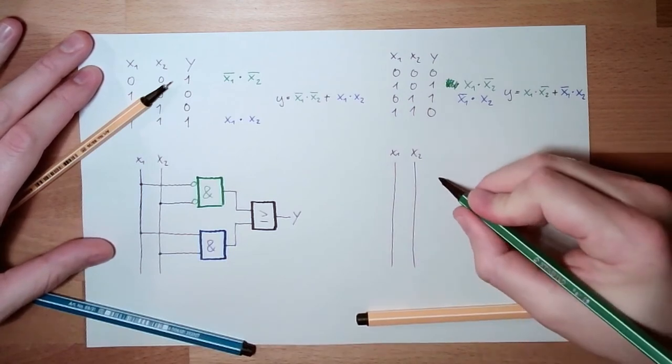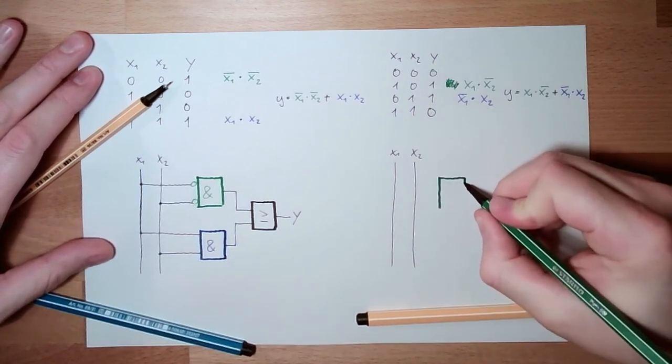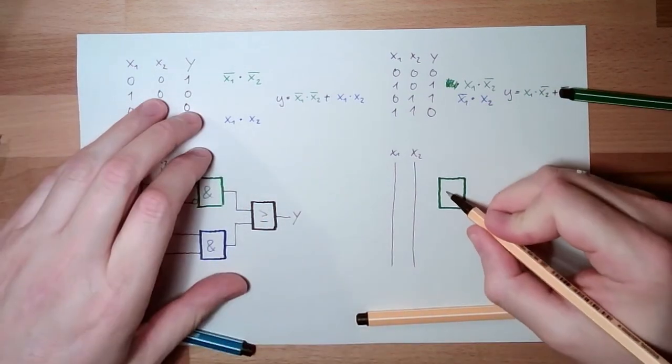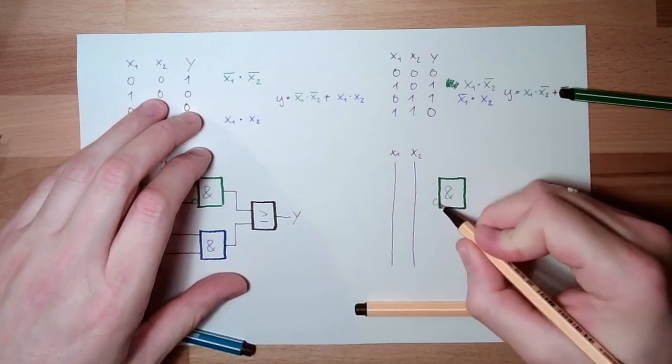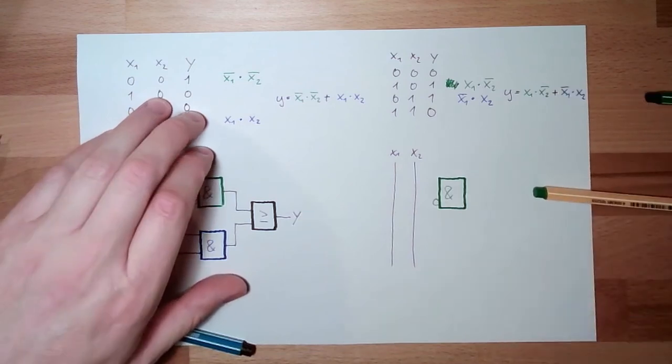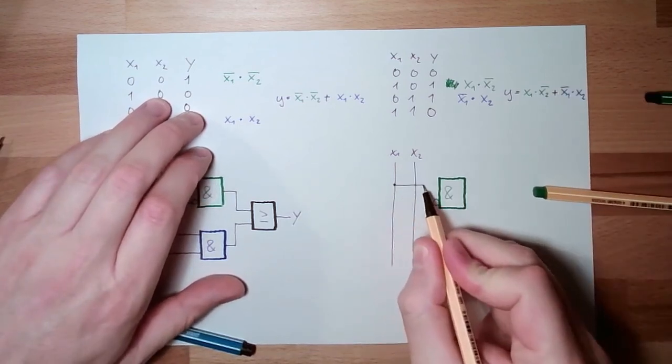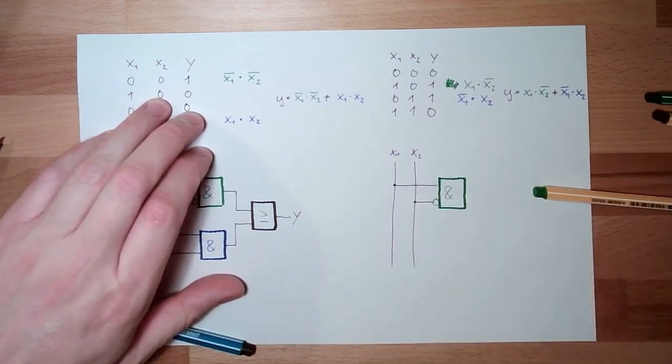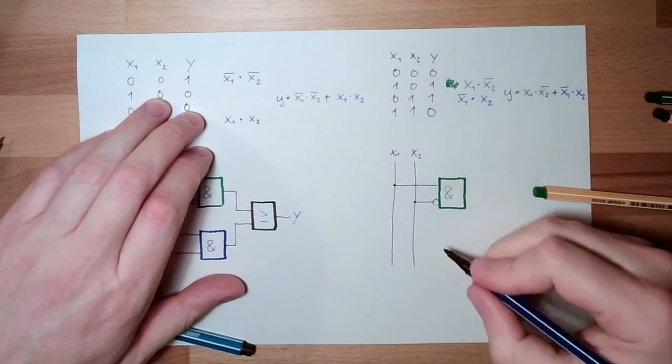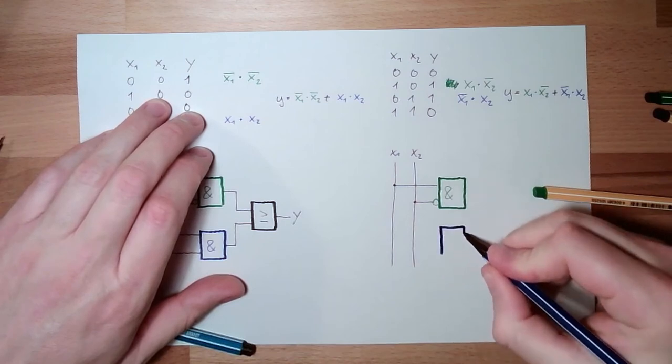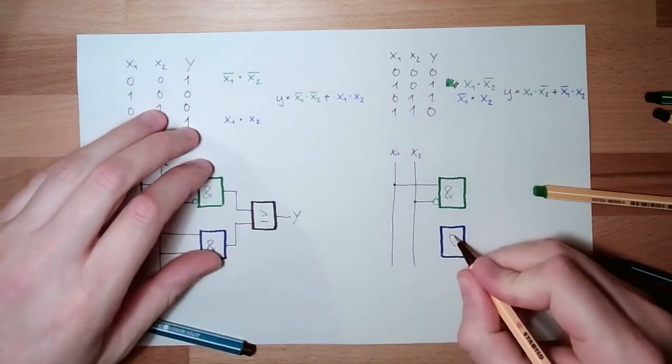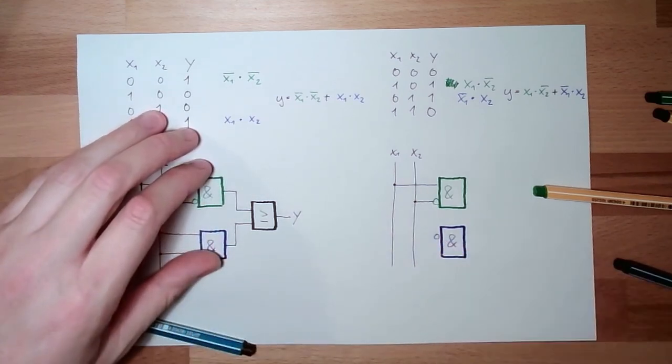This time only one input is inverted, so it's X1 and NOT X2, green part. Now let's have a look at the blue AND. It's also an AND. Also one input is inverted.